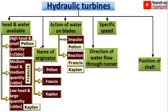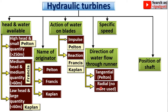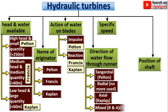We will discuss each type of hydraulic turbine in detail in the next video. Next, classification according to the direction of water flow through the runner: tangential flow turbine — example is the Pelton wheel; radial flow turbine — which is not much in use anymore; axial flow turbine — example is the Kaplan turbine; and mixed flow turbine, meaning both radial and axial — the example is the modern Francis turbine.